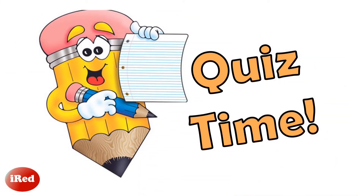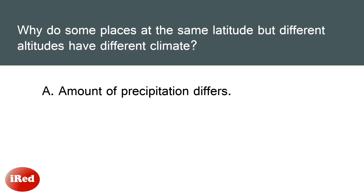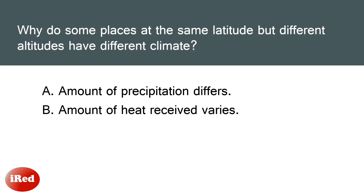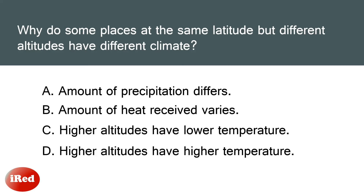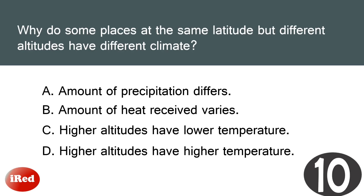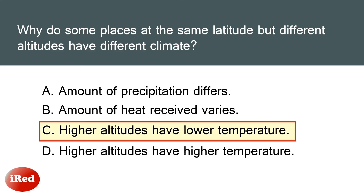Now let's check if you learned something from this video. Question number one: Why do some places at the same latitude but different altitudes have different climates? A) Amount of precipitation differs, B) Amount of heat received varies, C) Higher altitudes have lower temperatures, or D) Higher altitudes have higher temperatures. The correct answer is letter C — higher altitudes have lower temperatures.